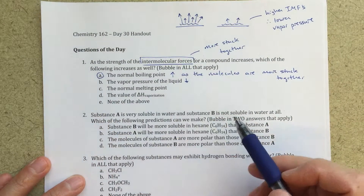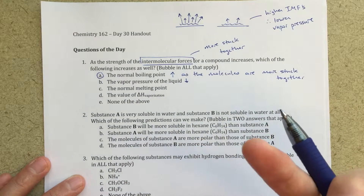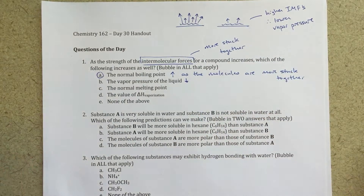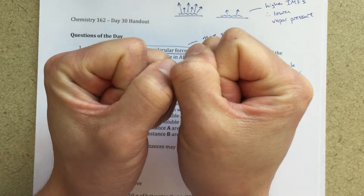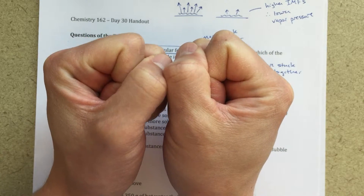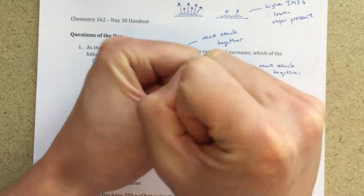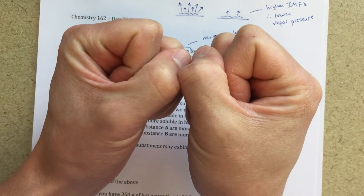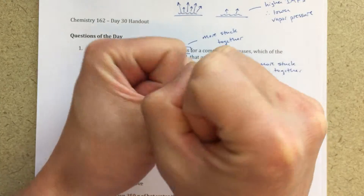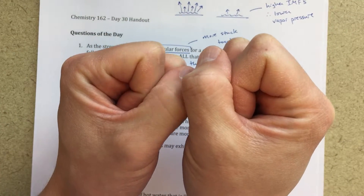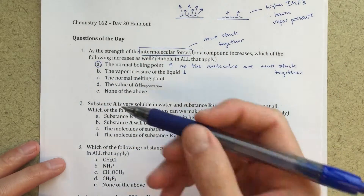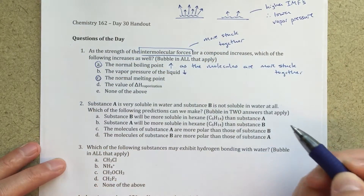Next is the normal melting point. The melting point and the boiling point are going to be sort of directly related — if the boiling point goes up, we should think that the melting point is going to go up too. It's the same exact concept. Now if we're in a solid, they might be vibrating or jiggling around a little bit. If I want to melt it, I'm going to have to break some of those intermolecular forces so they can start moving around more. So if they're more stuck together, that melting point is going to go up. It's going to be harder to do that, so it will also increase, just like the boiling point.